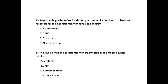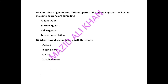Myasthenia gravis reflects a deficiency in communication because receptors for the neurotransmitter have been destroyed — the correct choice is acetylcholine. Next: the levels of this neurotransmitter are affected by the mood elevator cocaine — the correct answer is norepinephrine. Next: fibers that originate from different parts of the nervous system and lead to the same neuron are exhibiting — the correct choice is convergence.